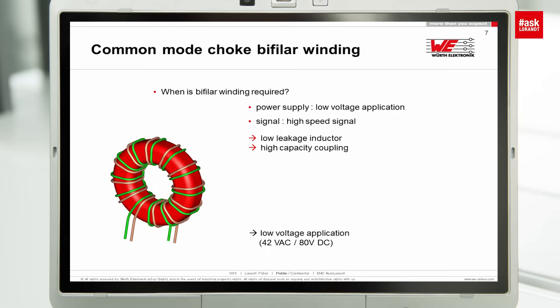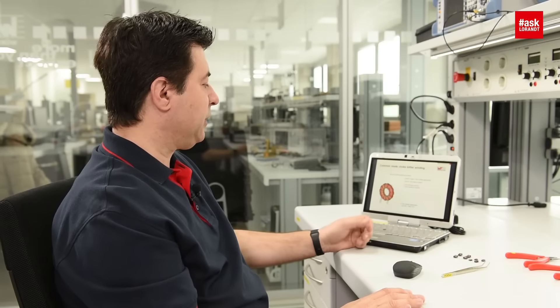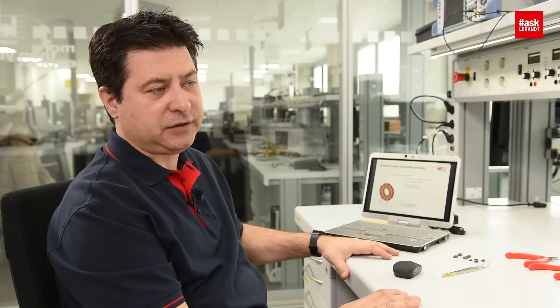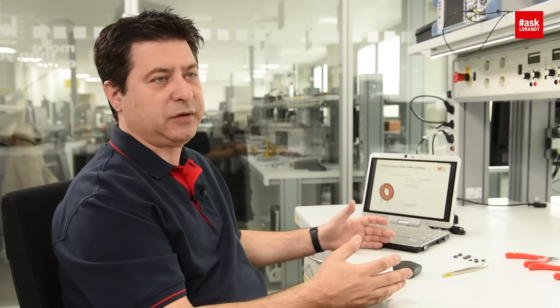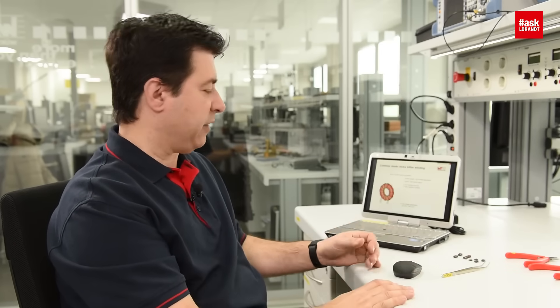For a data line, you can also use a bifilar single-volt cable, because normally you don't have such high voltages. Or even for power supply up to a maximum of 80 V DC, you can also use a bifilar cable. But if you have less leakage inductance and you have a power supply, you don't necessarily need this, because in a power supply you don't have data where this leakage would be a problem.